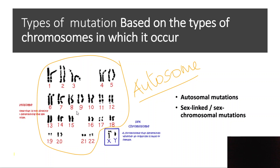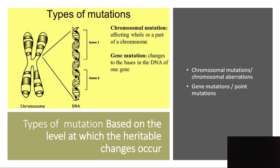We can also classify mutations based on the extent of the chromosome affected. If the number or structure of chromosomes is changed — for example, changes in gene sequence arrangements on a chromosome — these are called chromosomal mutations. Chromosomal mutations are those mutations which affect a part or the whole of a chromosome.